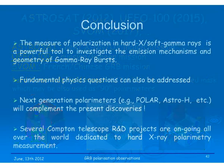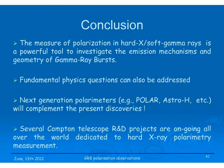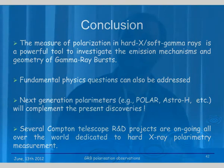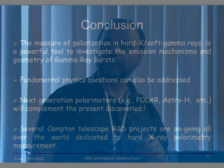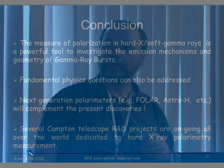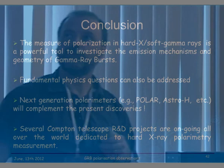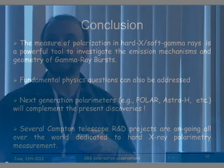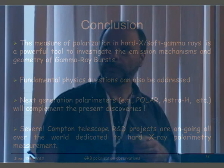In conclusion, measurement of polarization is a powerful tool to investigate the emission mechanism and geometry of gamma-ray bursts. It can also address fundamental physics questions such as Lorentz invariance violation. We will have next-generation polarimeters, though they may not be exactly what we want. Around the world, several Compton telescope and polarimeter projects are underway to find better solutions. Thank you.